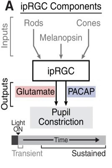There are five known types of intrinsically photosensitive retinal ganglion cells (IPRGCs): M1, M2, M3, M4, and M5. Each of these different IPRGC types have different melanopsin content and photosensitivity.